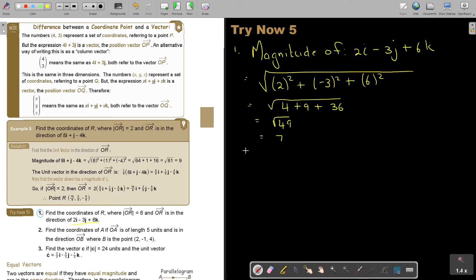So now, the unit vector in the direction, it's going to be 1 over the 7.